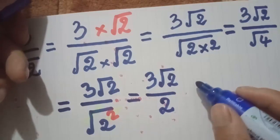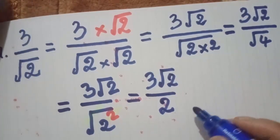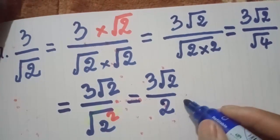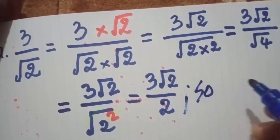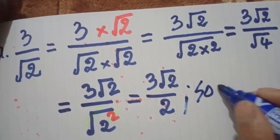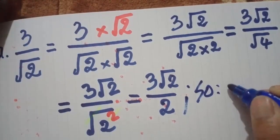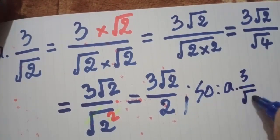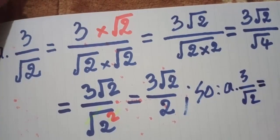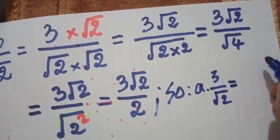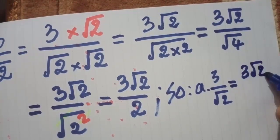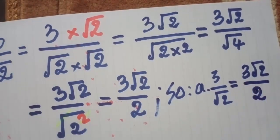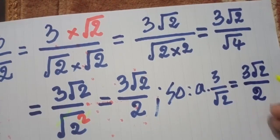So the answer for A is 3 radical 2 over 2. Ok, the answer: A equals 3 over radical 2 equals 3 radical 2 over 2.